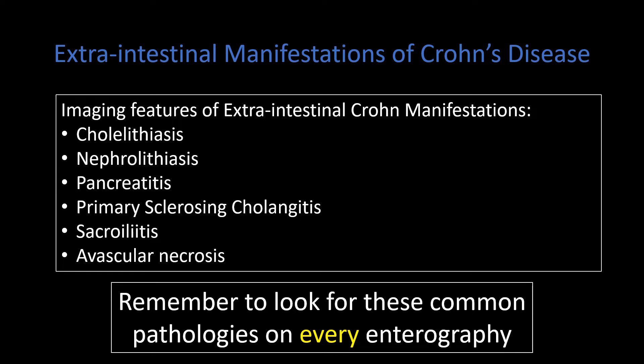Let's talk about why these extra-intestinal manifestations are important. They can be easily detected on CT or sometimes on MRI, and they are more common in Crohn's patients than in the general population. The manifestations of these various pathologies will look very similar in a Crohn patient to what they look like in a non-Crohn patient, so you'll be familiar with many of these entities. It's really an emphasis on remembering to look for these in every patient with Crohn disease.